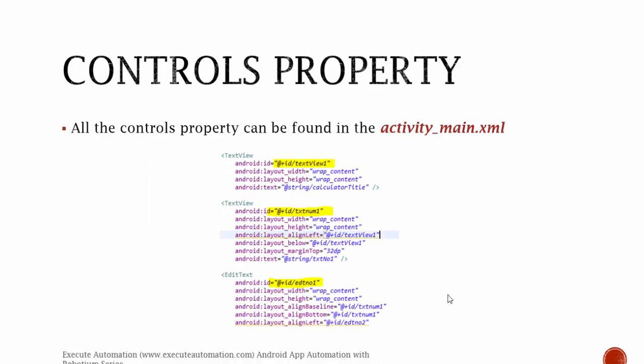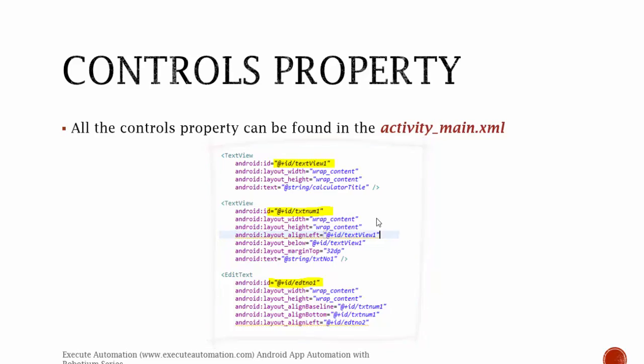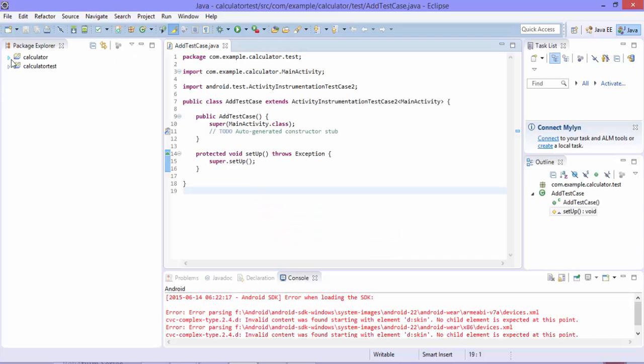Control properties can be found in the activity_main.xml file. Remember in parts 5 and 6 of this video series, while we developed the Android native application, we discussed about the activity_main.xml file, which is a collection of all the controls layout. It also has the controls' ID, text, layout_height, etc. As you can see here, the Android ID has the ID of each particular control — the text box control, text view control, etc.